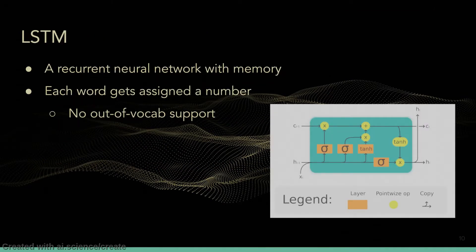The second model we decided to try was an LSTM, which stands for Long Short-Term Memory. As the model processes each word sequentially, it can remember words at the beginning of the sentence to get a deeper understanding of the sentence as a whole. To convert text to a form the model can understand, each unique word was assigned a number. This technique offers no out-of-vocabulary support and each number offers no contextual meaning, but it is easier to implement and offers good performance when the model does recognize the word.